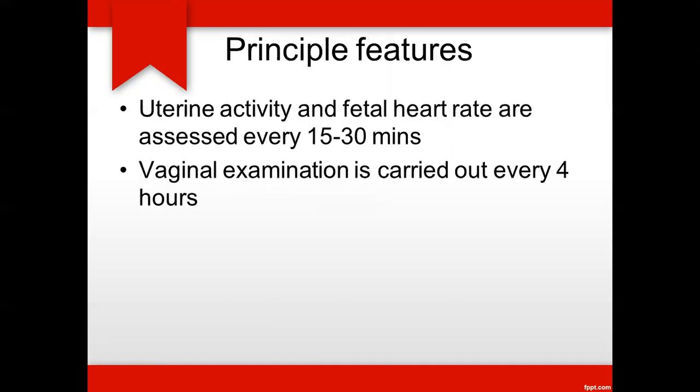What are the principal features of the partograph? Uterine activity and fetal heart rate are assessed every 15 to 30 minutes — within 30 minutes in the first stage of labor, and every 15 minutes in the second stage. Vaginal examination is carried out every 4 hours. These two are the principal features of the partograph.